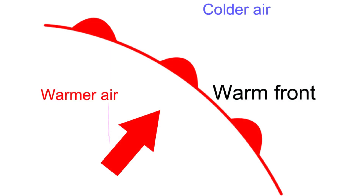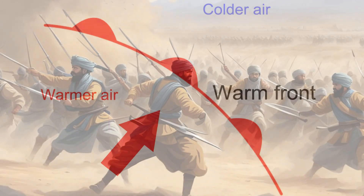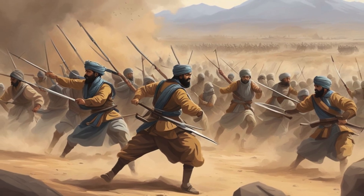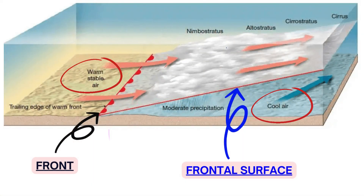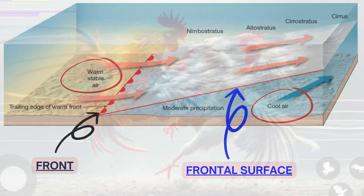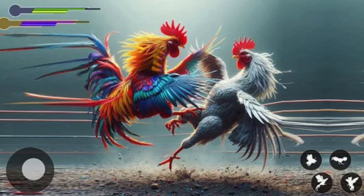Fronts occur when two air masses of different temperature interact with each other. You can think of different air masses as different armies, and a front is like a war front where soldiers are fighting each other. The border where this fighting is happening is called the frontal surface, which extends into the atmosphere. Where the border between the two air masses touches the ground is called the front.